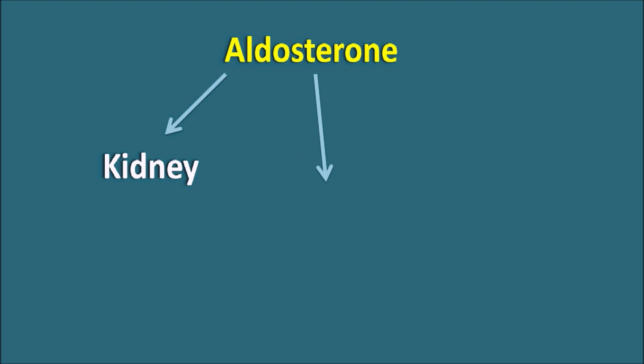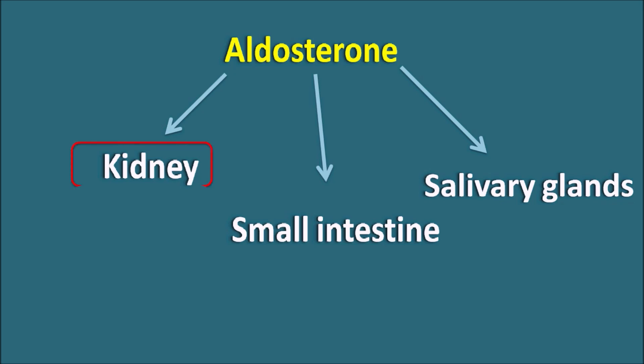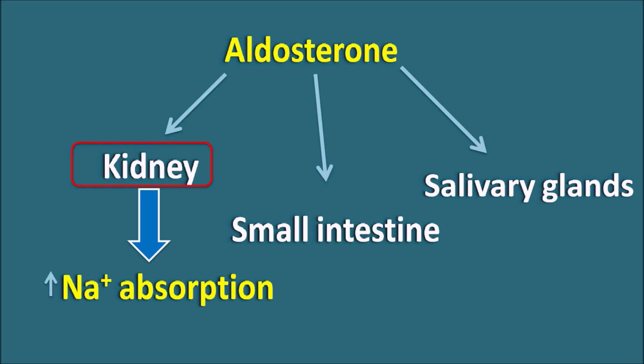Aldosterone mainly shows mineralocorticoid activity at three important organs: the kidney, the small intestine, and the salivary glands. At these three organs, aldosterone has more action compared with cortisol. The action of aldosterone is mainly important in the kidney, where it is responsible for increased sodium reabsorption and increased potassium excretion — sodium reabsorption is increased and potassium excretion is increased.